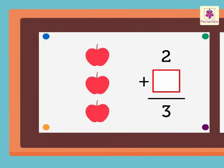The sum is three. There are three apples given. The given addend is two. We hide the apples equal to the given addend. Thus, we hide two apples.